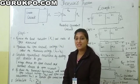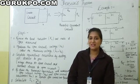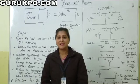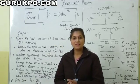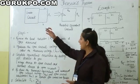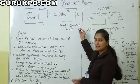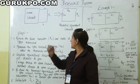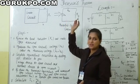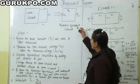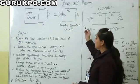What is the statement of Thevenin's Theorem? It states that any two-terminal DC network can be reduced to an equivalent circuit consisting of a voltage source and a series resistor. This is our equivalent Thevenin's circuit.